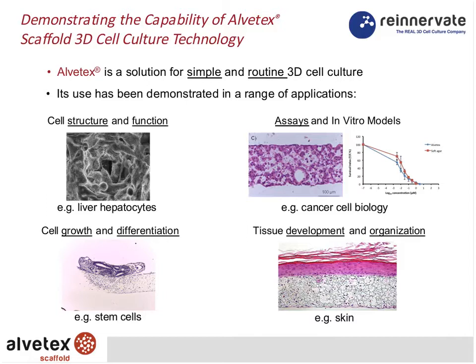We've spent a lot of time working with collaborators and customers to demonstrate how Albatex can be used, across a wide range of applications. We have good evidence of how structure and function of cells can be altered in 3D, of growth and differentiation, novel assays and in vitro models, and complex structures in vitro. We can study tissue development and organization of tissues in the laboratory. I'm going to run through a series of examples, starting with liver hepatocytes.